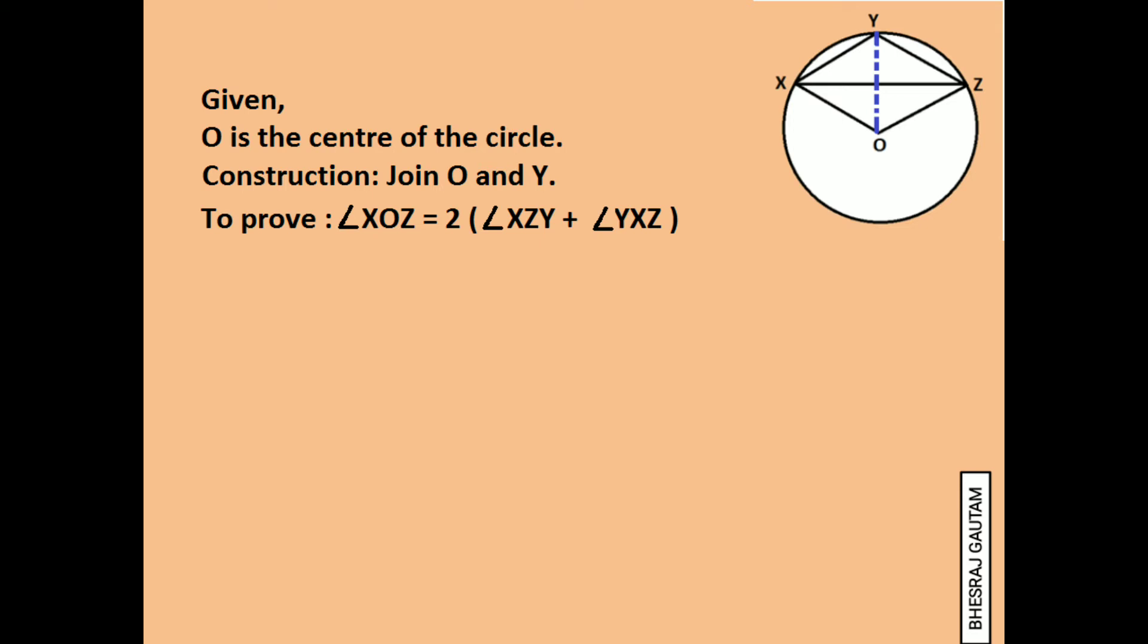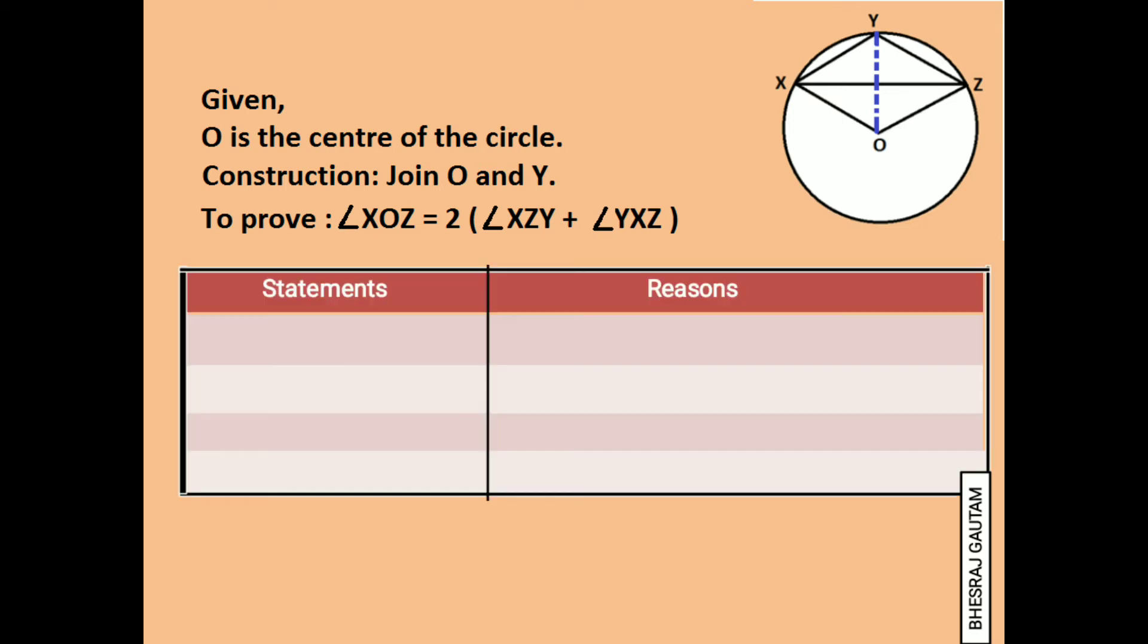Now draw the statement reason table. We know that central angle is twice the inscribed angle standing on the same arc. So we can write central angle XOY is equal to two times the inscribed angle XZY as they stand on the same arc XY.